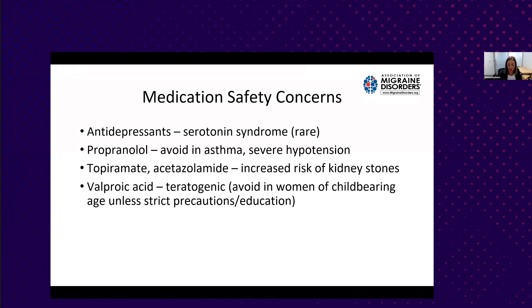For propranolol, a beta blocker, you want to avoid it in patients with asthma or severe hypotension, though at the lower doses used these are rarely a problem. With topiramate and acetazolamide, there is an increased risk of kidney stones—not a contraindication but requires patient education about hydration and avoiding grapefruit juice. Valproic acid is teratogenic, so avoid it in women of childbearing age. Educate patients about these safety considerations, and there are many other medication options available.